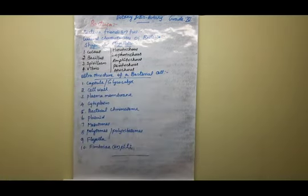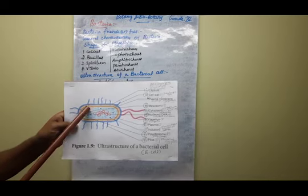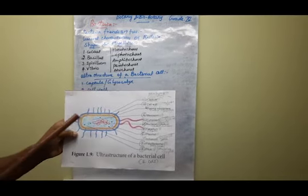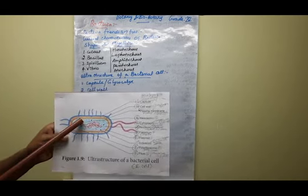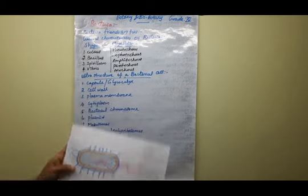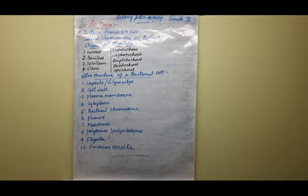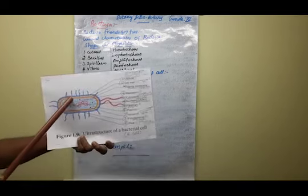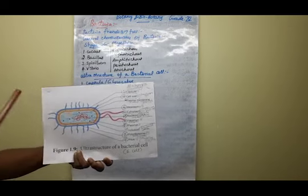Mesosomes are infolding-like structures of the plasma membrane. They form vesicles, tubules, and lamellar-like structures. The two major functions of mesosomes are respiration and binary fission.